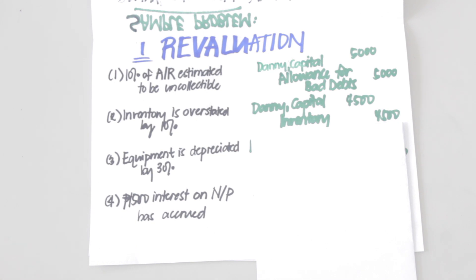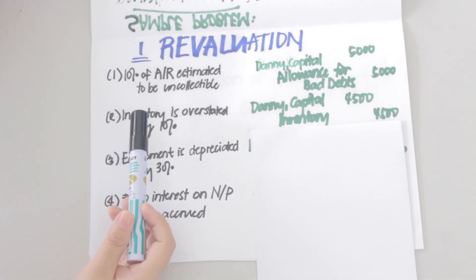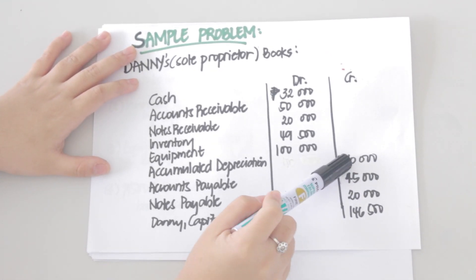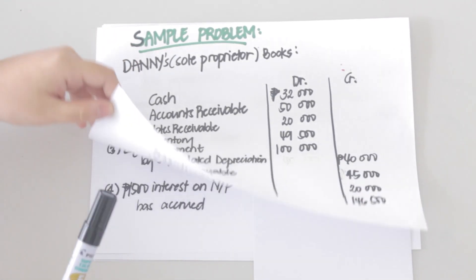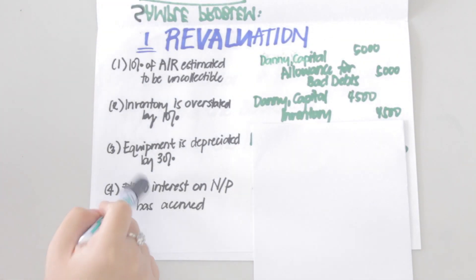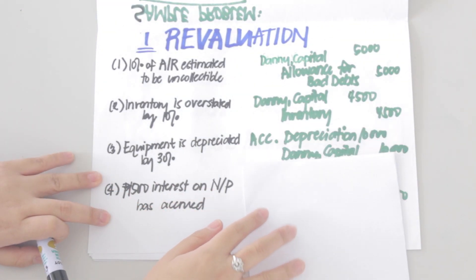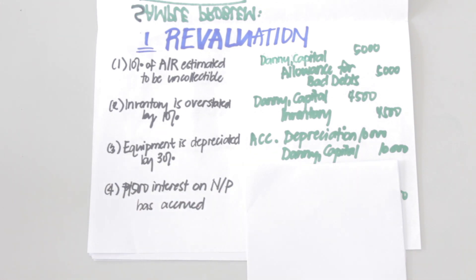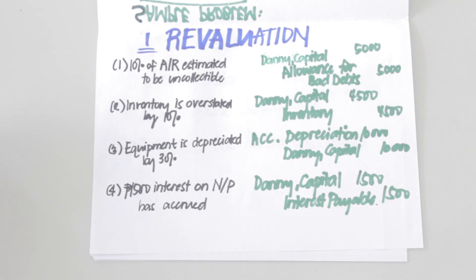The third item states that equipment should only be depreciated by 30%, meaning accumulated depreciation should equal 30% of 100,000 pesos, or 30,000 pesos. The accumulated depreciation recorded in the books is 40,000 pesos, which means it is overstated by 10,000. To correct this, we make a debit to accumulated depreciation and a credit to Danny capital for 10,000 pesos. This will increase both the assets and capital of the sole proprietorship.